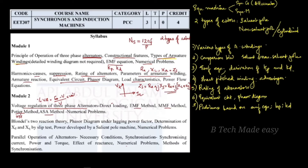The ASA method uses a combination of the MMF method and corrections. The ASA method can be used for both salient and non-salient pole machines. To summarize this module, we will cover: the EMF method, MMF method, ZPF (Potier) method, and ASA method.